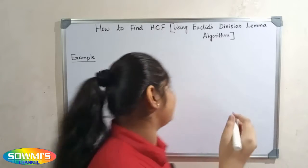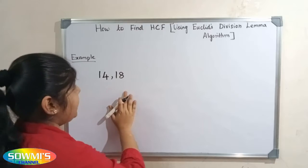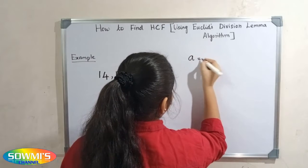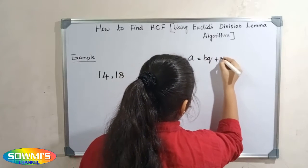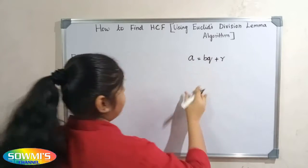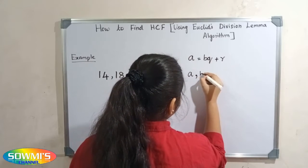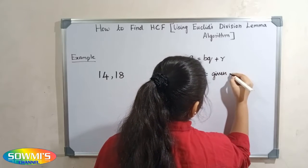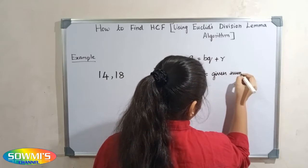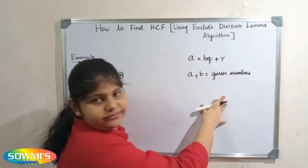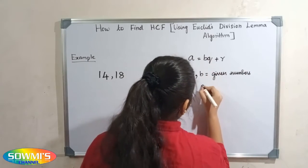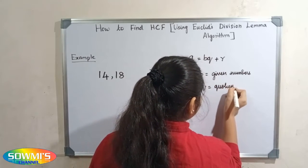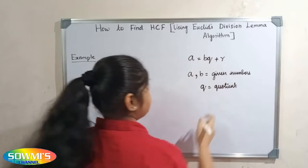For example, we can take 14 and 18. Euclid's division algorithm says: a = bq + r, where a and b are the given numbers, q is the quotient, and r is the remainder.